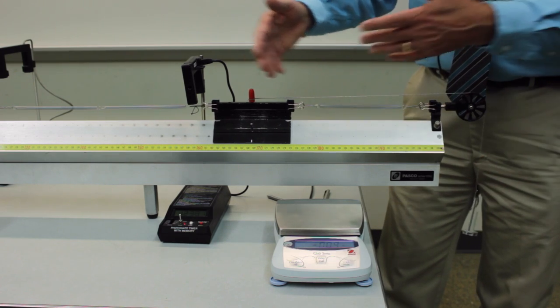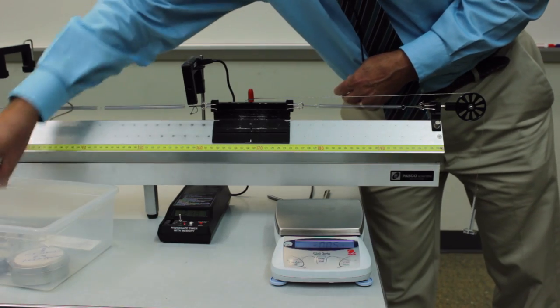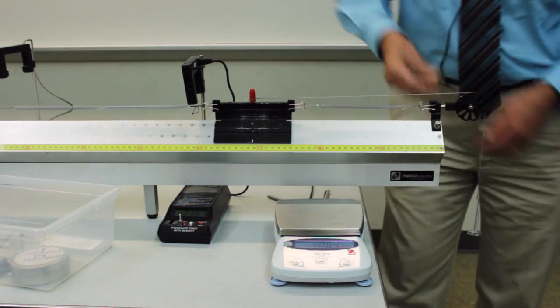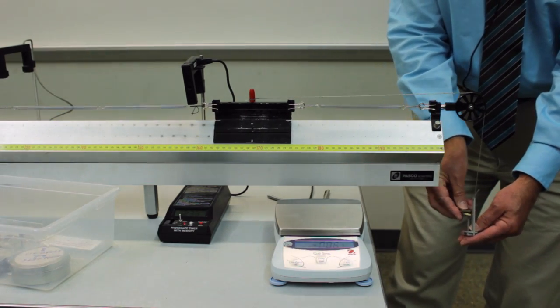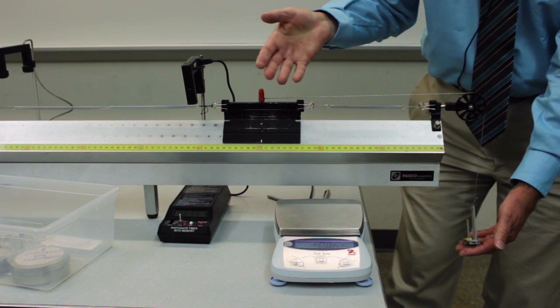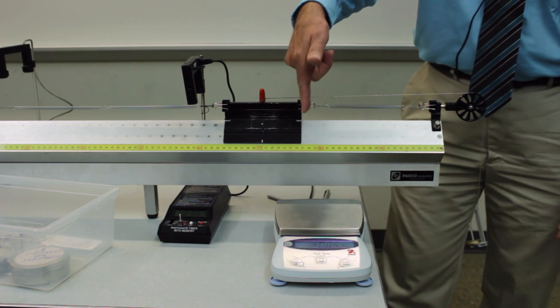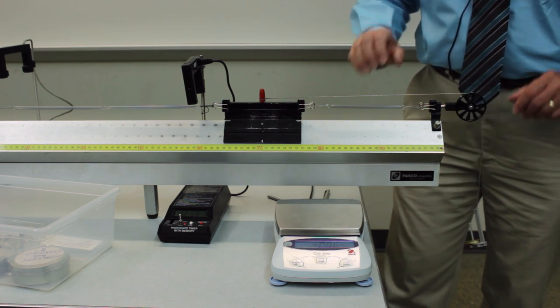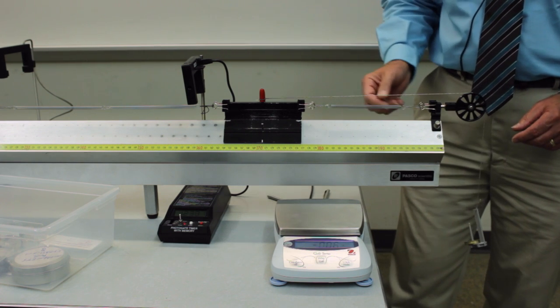And once again make as many combinations of force applied by the hanging masses on the end of the string as a function of the displacement of the glider. Plot that again and determine the new spring constant.